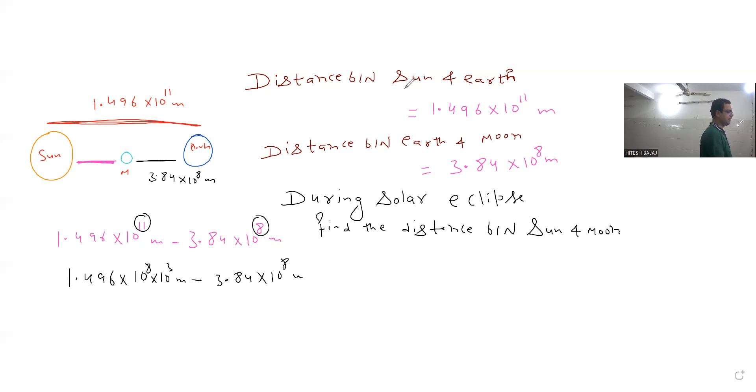Okay, now 10 to the power 8 meters. 1.496 into 10 to the power 3 minus 3.84. 10 to the power 3 is a thousand.